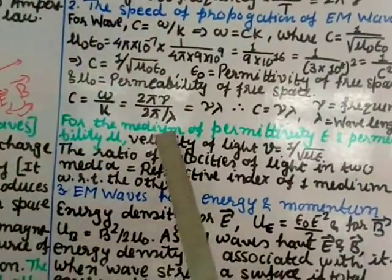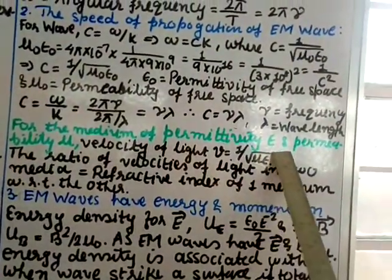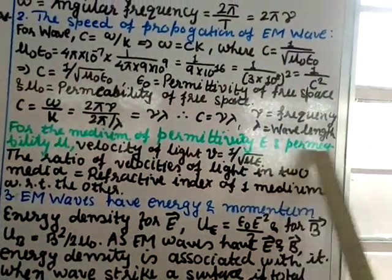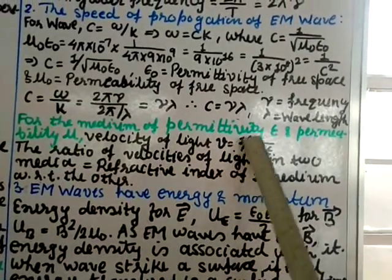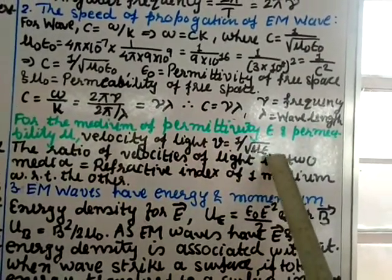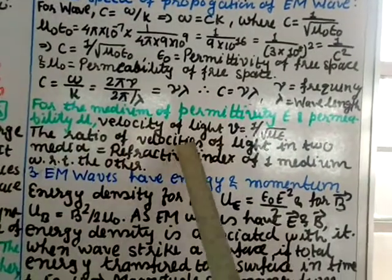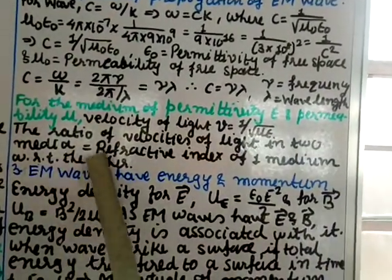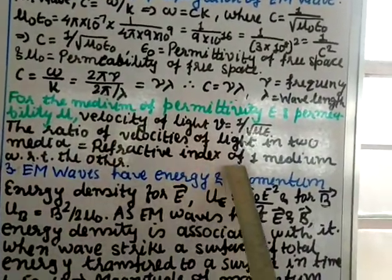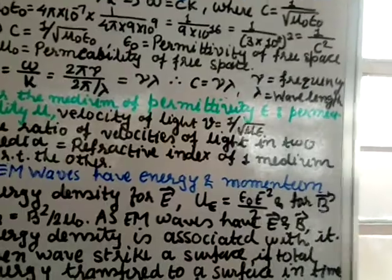For a medium of permittivity ε and permeability μ, the velocity of light is V = 1/√(με). The ratio of velocities of light in two media equals the refractive index of one medium with respect to the other.